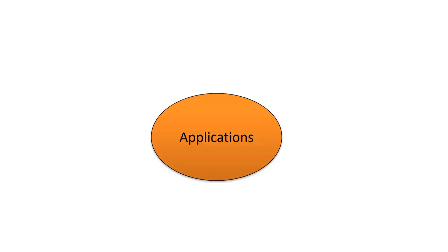They have various applications in various fields. In food, they are used to improve texture and flavor of the food and improve the mouthfeel. For example, Listerine mouthwash is a commercially available product. EPS are also used in biodegradable packaging of food.